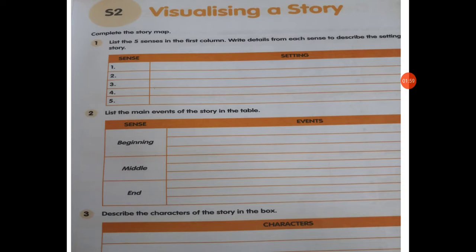Question two: list the main events of the story in the table. You have to write down events from the story. For the beginning, we write: Steven was a simple boy and he lived with his family in a small corn farm in the hills of America.